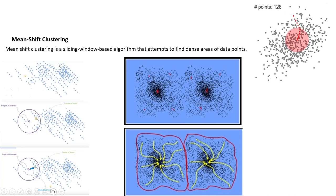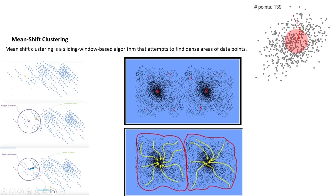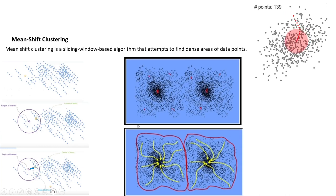Given a dataset, we start from a random point, calculate the centroid of the points inside the search radius, and then move towards that centroid. In the next iteration we move the center of the circle to the new centroid and keep doing this until we can no longer move the cluster center.